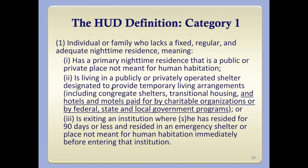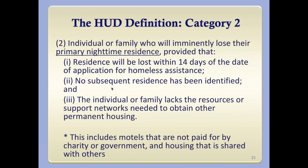Now we're going to switch gears and look at the HUD definition of homelessness. HUD has taken its complex definition and collapsed it into four categories. Category one is lacking a fixed, regular, and adequate nighttime residence — the same broad umbrella definition — which also includes people in hotels or motels paid for by charitable organizations or federal, state, and local government. That category is considered category one of the HUD homeless definition.